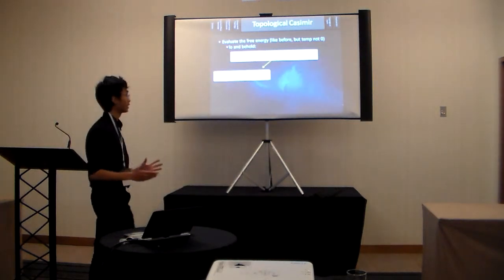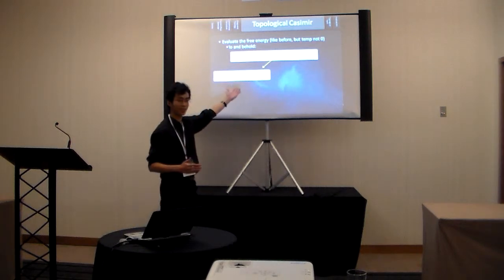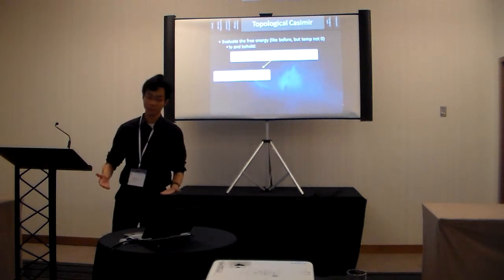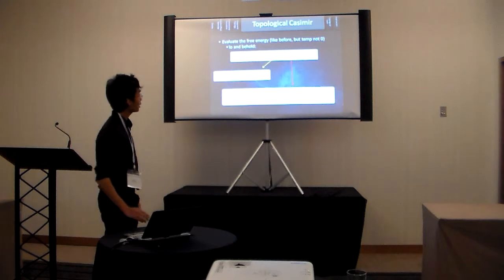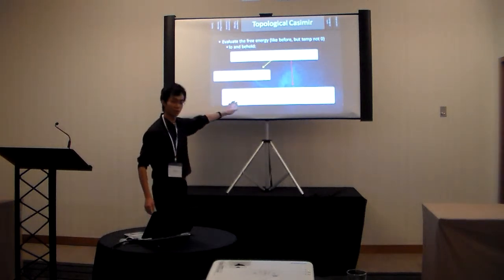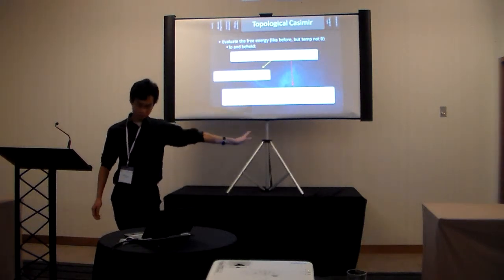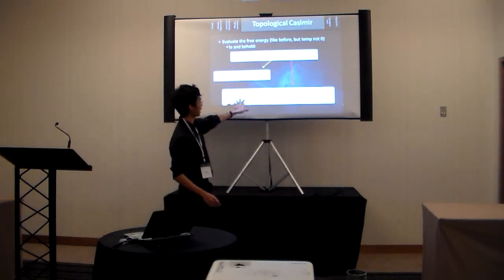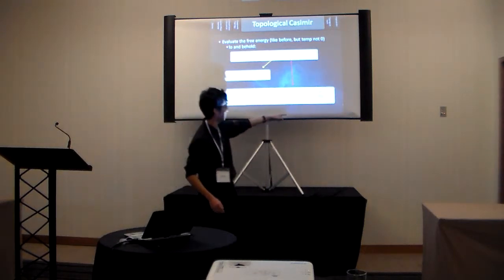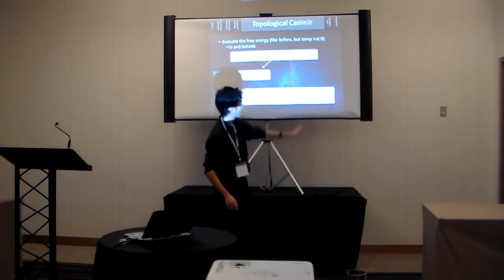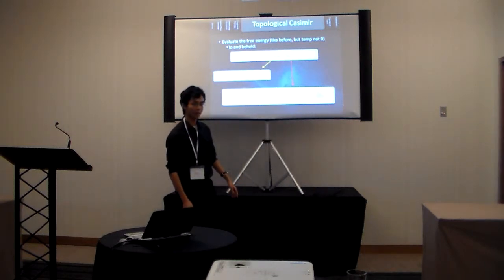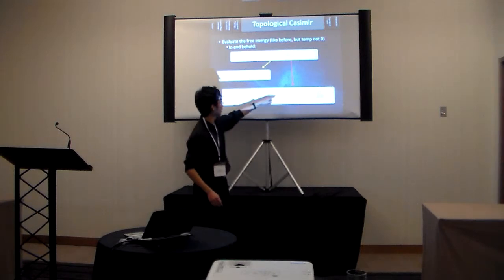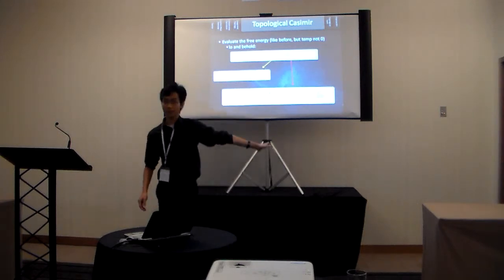The first part was like the original conventional Casimir effect that I mentioned at the beginning of this talk. The second part is a pure topological contribution that no one has ever discussed before. And that comes purely from the topology. And we can see, although this is big and scary, what we need to take away from this is that it depends on tau, which is sensitive to the box size, sensitive to the dimension of the box, and depends on an unknown parameter called theta.